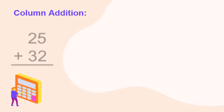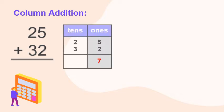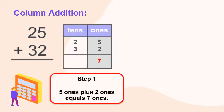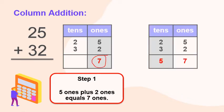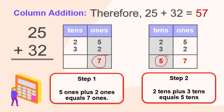Let's try it with column addition. First addend is 25, second addend is 32. Step one: do the ones place — five ones plus two ones equals seven ones. Step two: calculate the tens place — two tens plus three tens equals five tens. Therefore, 25 plus 32 is equal to 57.